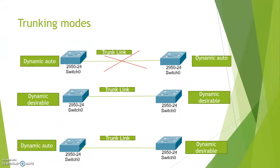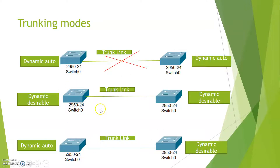One scenario where the trunk will not form is if both ends are in dynamic auto mode — each switch waits for the other to initiate, so the trunk never establishes due to the passive nature. For a trunk to form, either both switches should be in dynamic desirable mode, or one should be in dynamic auto and the other in dynamic desirable mode.